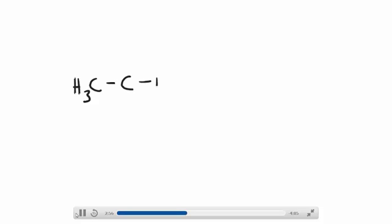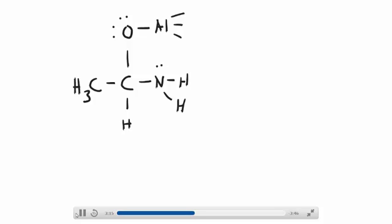So what do you get? You get a tetrahedral intermediate. Now the neat thing about the amide is this nitrogen — this nitrogen can use its lone pair of electrons to make a carbon-nitrogen double bond.